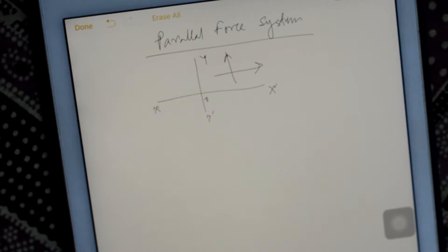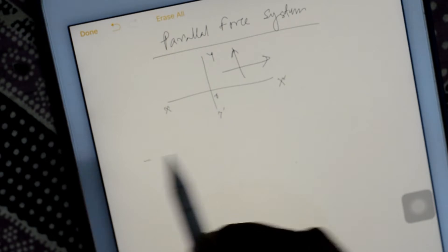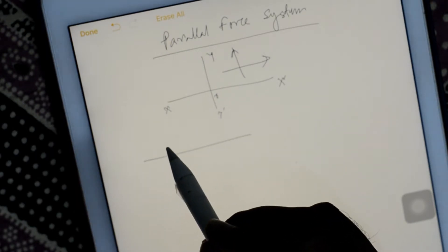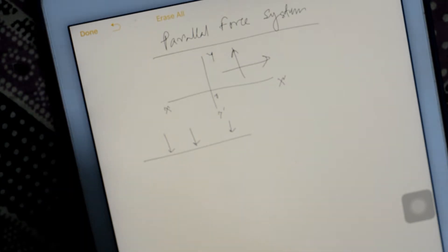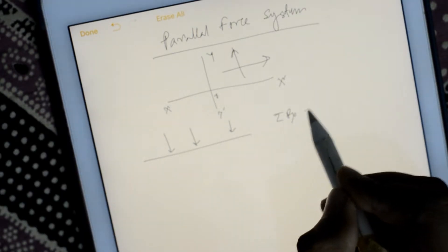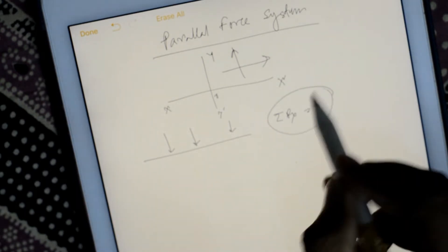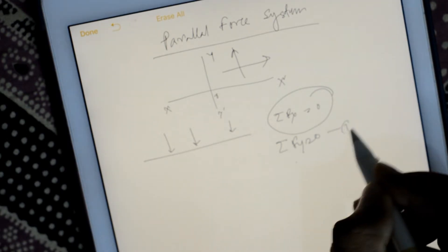Suppose this is a system where this kind of force is applied. So here f dash x is not available, so we cannot find f dash x. Just find summation f y equal to 0. So we find the relation.